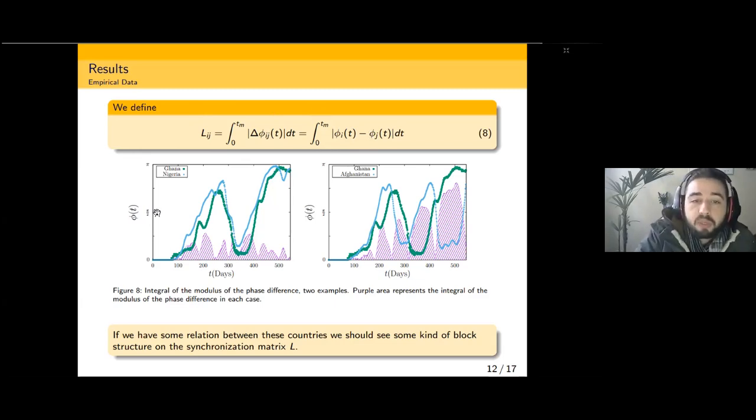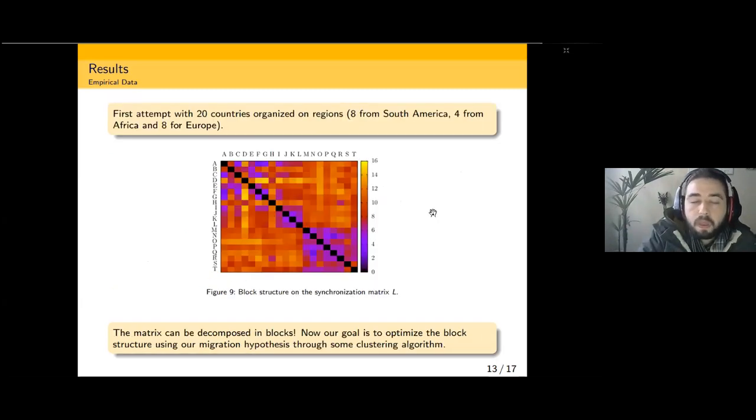When we see countries that are more synchronized, we can see that this area in purple is much smaller than on the right case—the case of Ghana and Afghanistan. The waves are clearly unsynchronized and the area in purple is larger. Now we have a measure of how unsynchronized these epidemic waves are. With this relation in mind, we want to build a synchronization matrix between countries where elements of this matrix are given by equation eight.